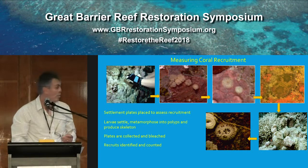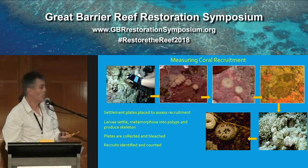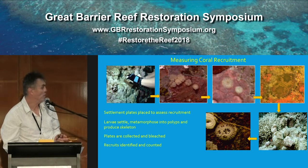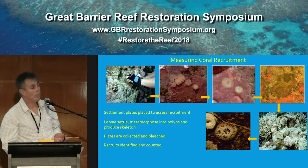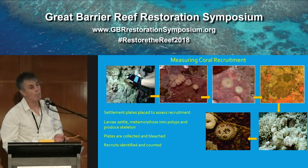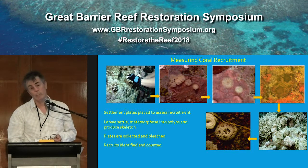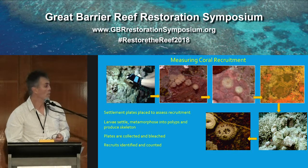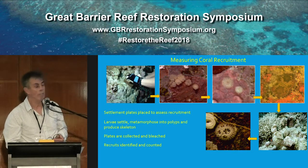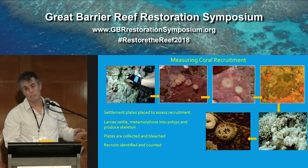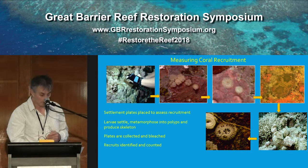For coral recruitment, the usual process is the deployment of some sort of settlement substrate. The spawning happens, the recruits come in, they metamorphose, produce the skeleton and take on the size of the polyp. The recruitment devices, typically tiles, are recovered, bleached, and the recruits are counted, and that gives us our data on recruitment.